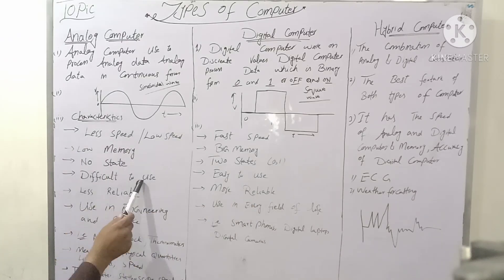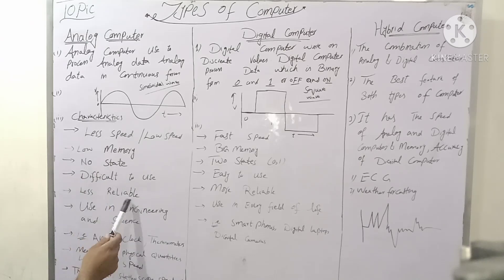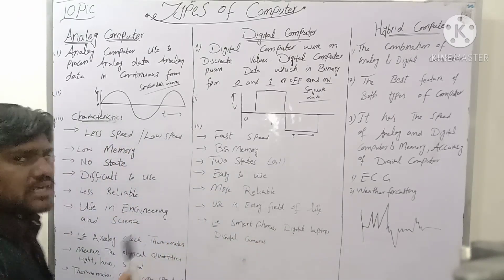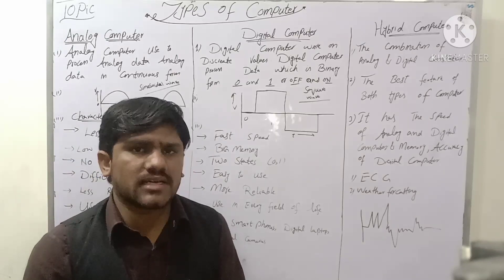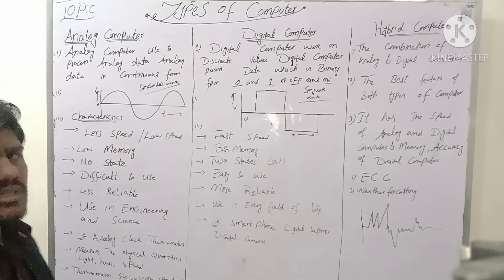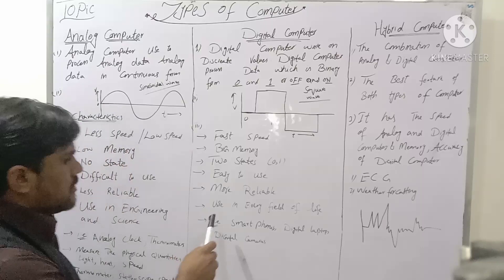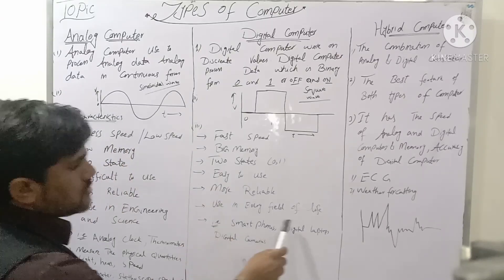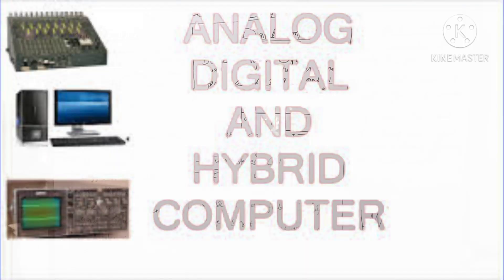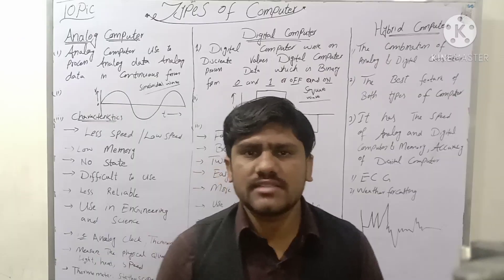Analog computers are difficult to use, while digital computers are easy to use. Analog computers are less reliable, but digital computers are more reliable. Analog computers are used mainly in engineering and science, while digital computers are used in every field of life.